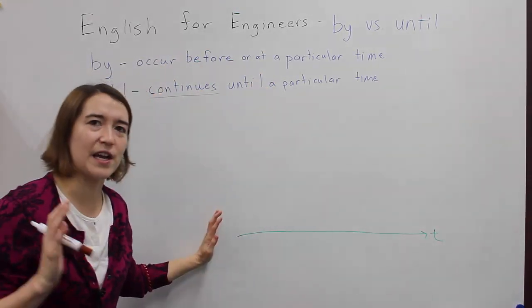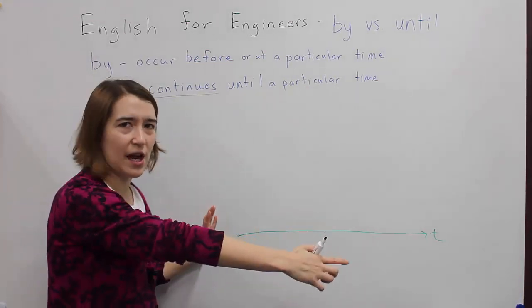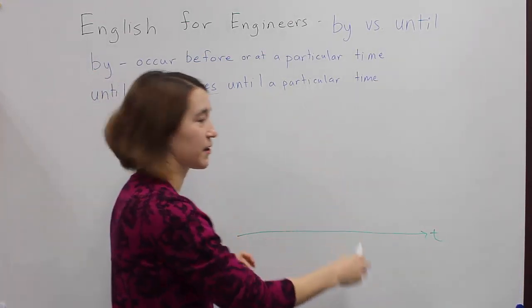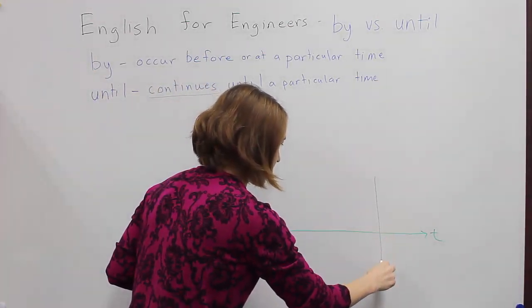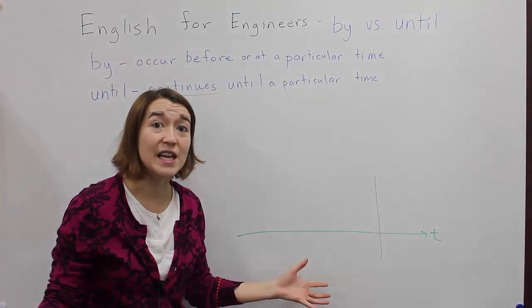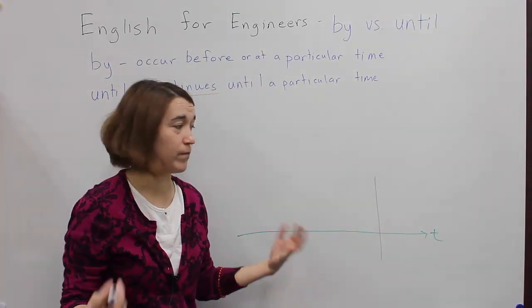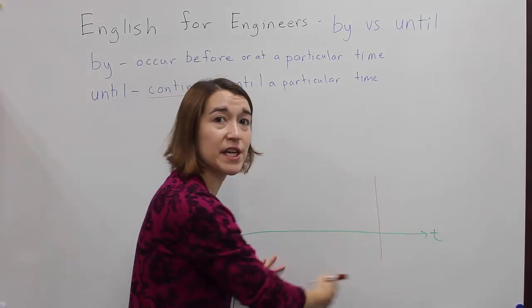So let's look at, we'll take an engineer approach and look at a timeline here. So if we have our particular time, so our particular time is here. For example, we have a lot of deadlines in school. And so we'll say there's a particular time.